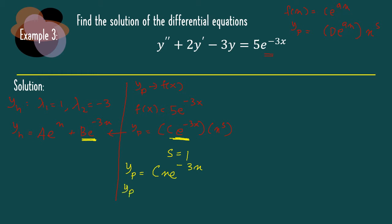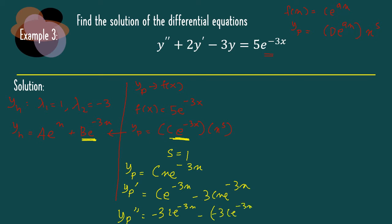Since this is a product of polynomial and exponent, we need to use the product rule to differentiate yp. Differentiating for the first time, we get c e minus 3x minus 3cx e minus 3x. Then differentiating again using product rule, we get minus 3c e minus 3x plus 9cx e minus 3x.